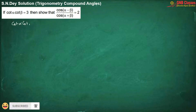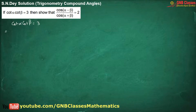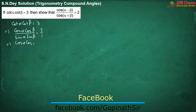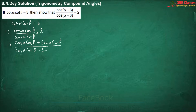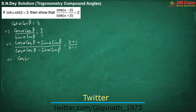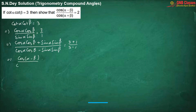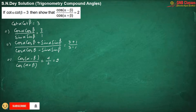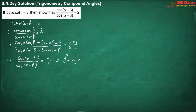They have given us an expression. We are converting it in terms of sine and cosine. Now applying componendo and dividendo, in the numerator we are getting cos alpha minus beta, and in the denominator we are getting cos alpha plus beta, which equals 4 by 2, giving us 2. Have you understood it? Okay, let us move for the next problem.